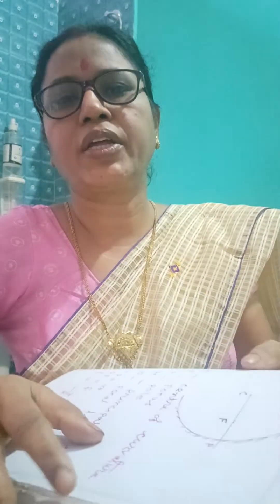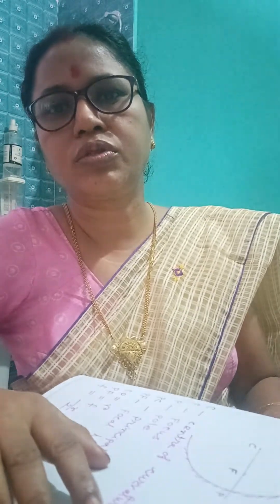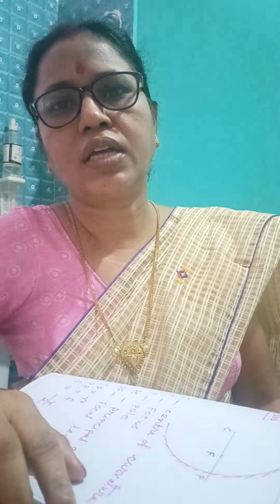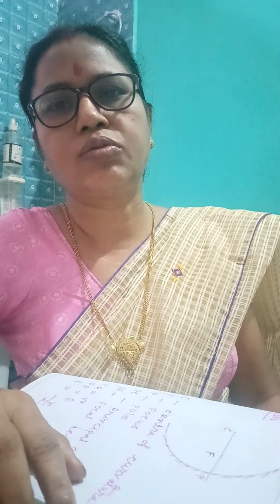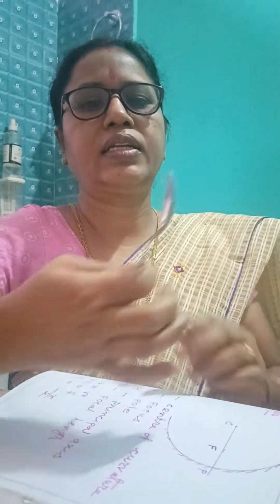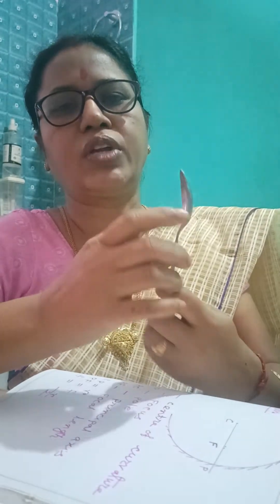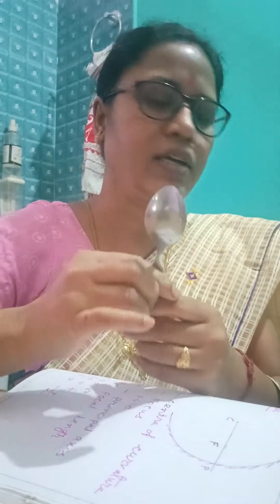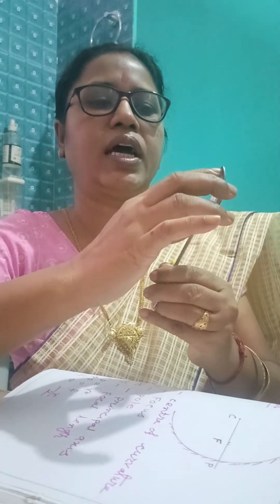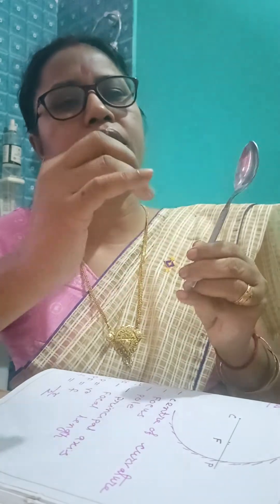To understand Spherical Mirrors in our daily life, we use different things. For example, we use a spoon. The inner part of the spoon and the outer part of the spoon help us understand these mirrors.